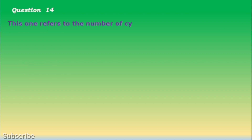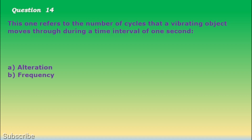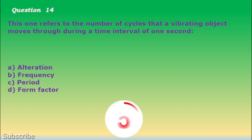Question number 14. This refers to the number of cycles that a vibrating object moves through during a time interval of one second. a. Alteration, b. Frequency, c. Period, d. Form factor. The correct answer is letter b. Frequency.